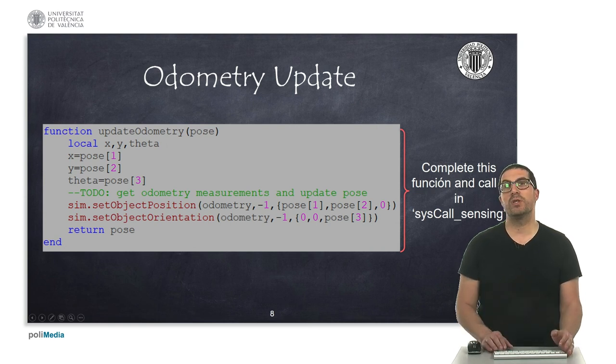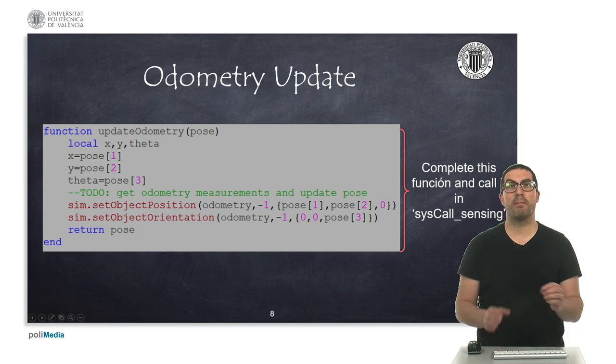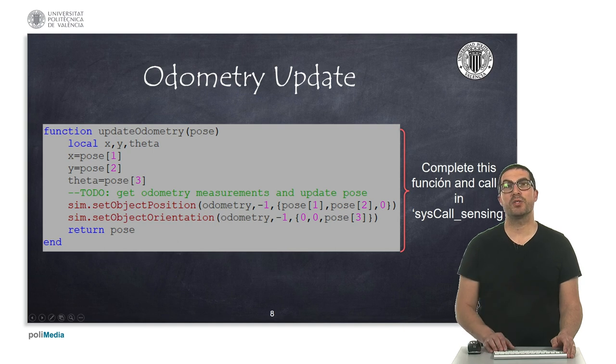And then the code you need to do is you must call the odometry function and update the position and orientation based on the previous equations shown. And once you have that, you have to update the pose variable, and then you can also set the position and orientation of the dummy object so you can get a proper trace of the odometry system.